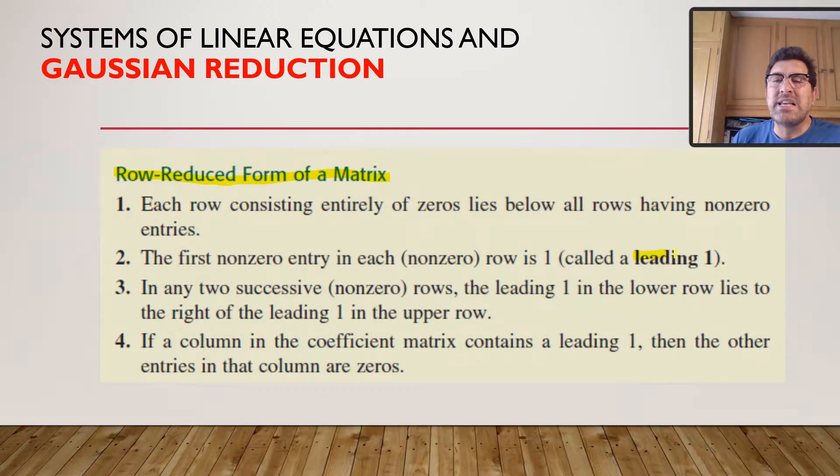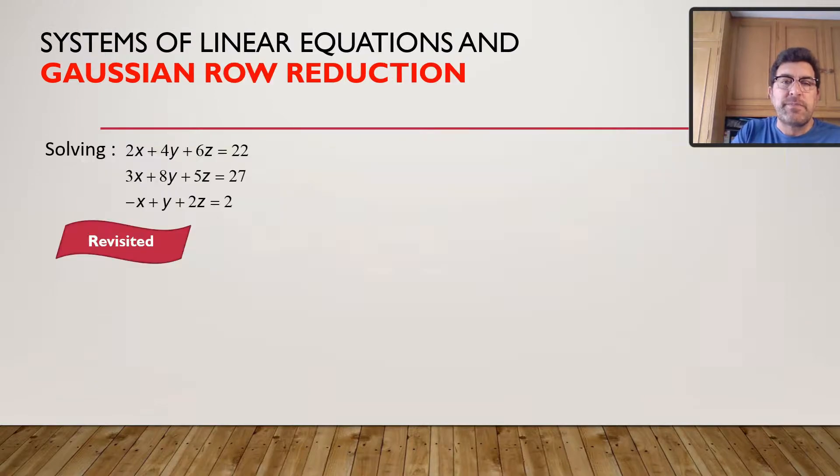We saw that with our previous slide, where I said let's create those ones on the diagonal. In any two successive non-zero rows, the leading one in the lower row lies to the right of the leading one in the upper row. Makes sense, because your diagonal has ones on them. If the column of the coefficient matrix contains a leading one, then the other entries in that column will be zeros.